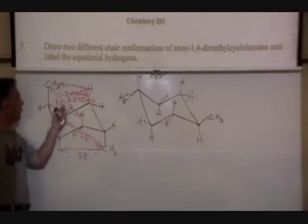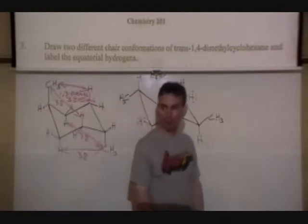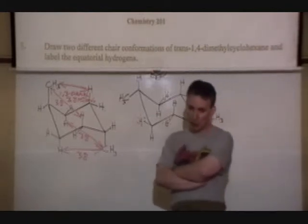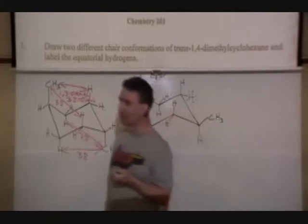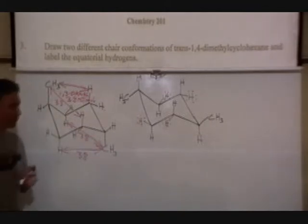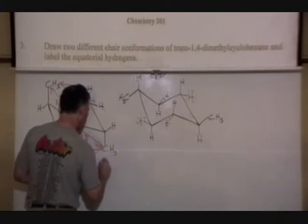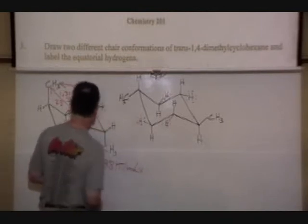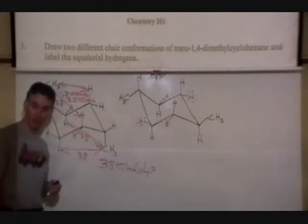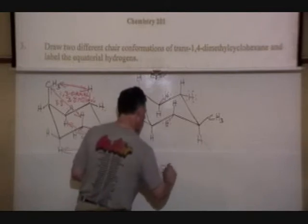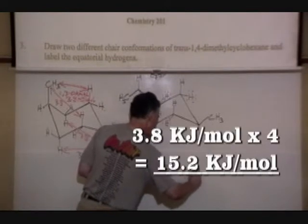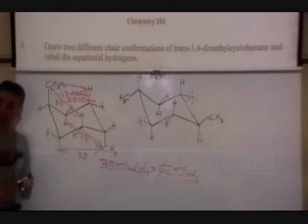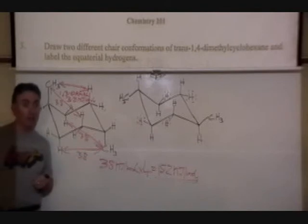So that diaxial strain, steric strain, 4 times over, that gives us 15.2 kilojoules total. 3.8 kilojoules per mole times 4, this is a total of 15.2. So the first example gives us 15.2 kilojoules of steric strain energy.